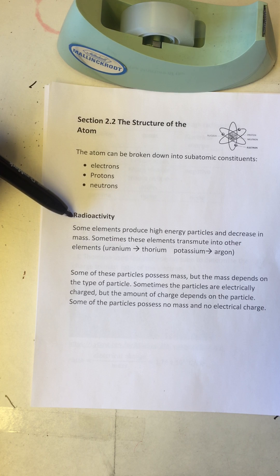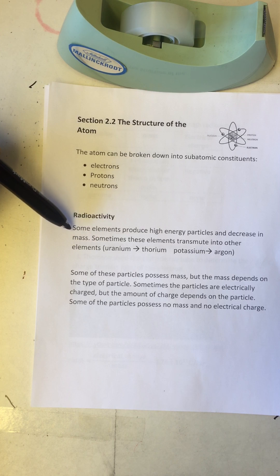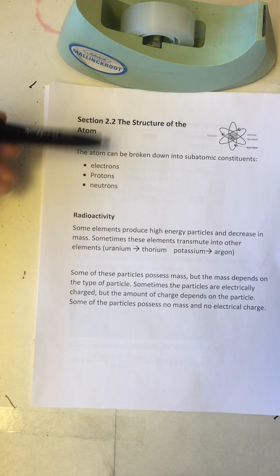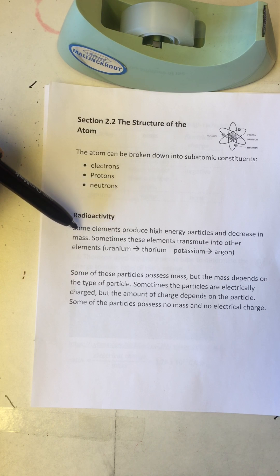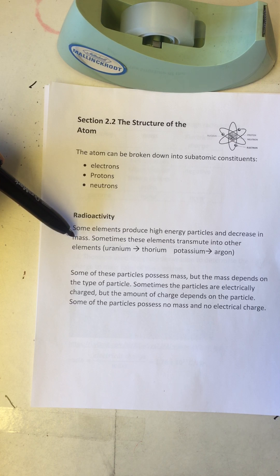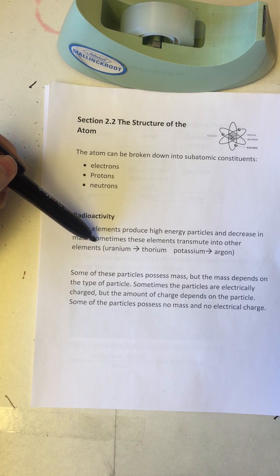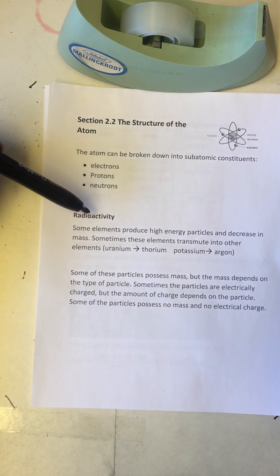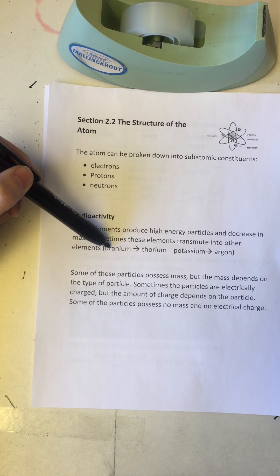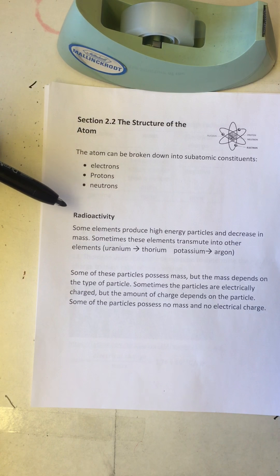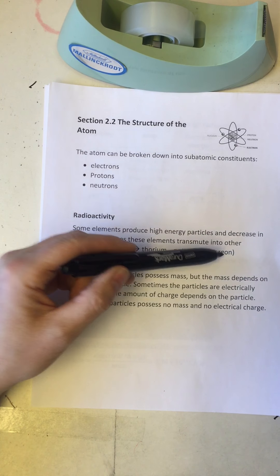A little bit of history. There is a property of some elements called radioactivity. In radioactivity, atoms of specific elements produce and radiate out high energy particles. When that happens, the element or atom decreases in mass — that energy flying off is taking mass with it. Sometimes these elements can even transmute, converting into other elements. For example, uranium can be transmuted into thorium, or potassium can be transmuted into argon.